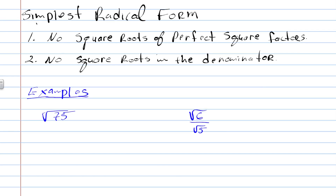Here we're going to talk about simplest radical form. There are two conditions to simplest radical form. Condition 1 is that there are no square roots of perfect square factors. Condition 2 is no square roots in the denominator. Since this is the square root edition, we're going to focus on square roots rather than radicals generally.